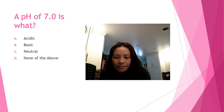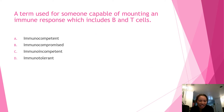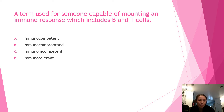Question four: a term used for someone capable of mounting an immune response, which includes B and T cells — is it A) immunocompetent, B) immunocompromised, C) immunocompetent, or D) immunotolerant? The answer is letter A — immunocompetent.